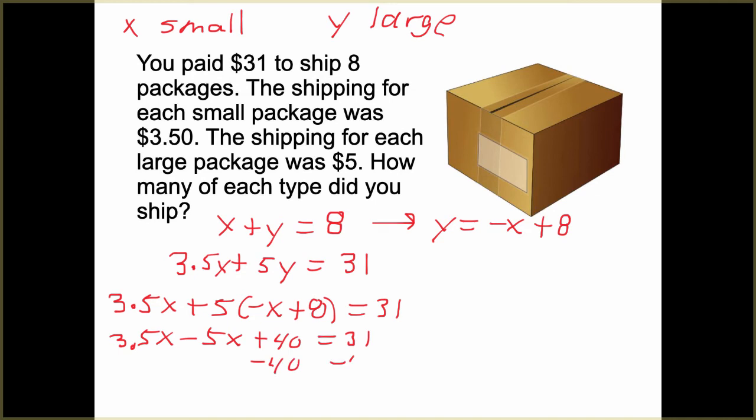We subtract 40. So 3.5X minus 5X is negative 1.5X, and this has to add up to negative 9. Divide it out, and when you divide negative 9 by negative 1.5, you're going to find that X is 6. So we have 6 smalls. And we put 6 into our original. We have negative 6 plus 8 which is 2 large. And we get Y is 2 large packages.